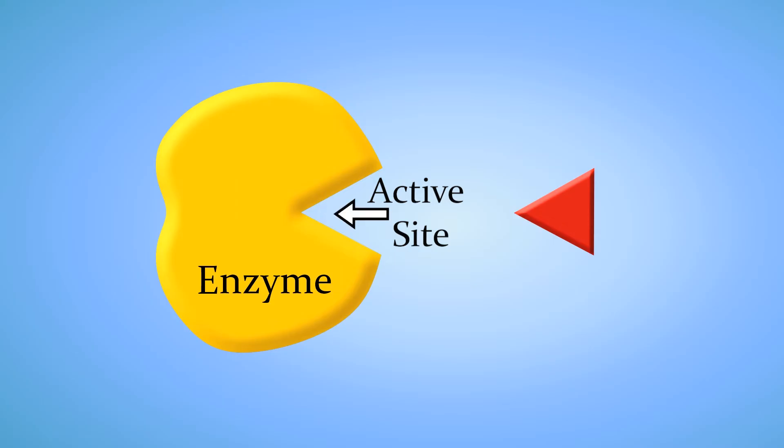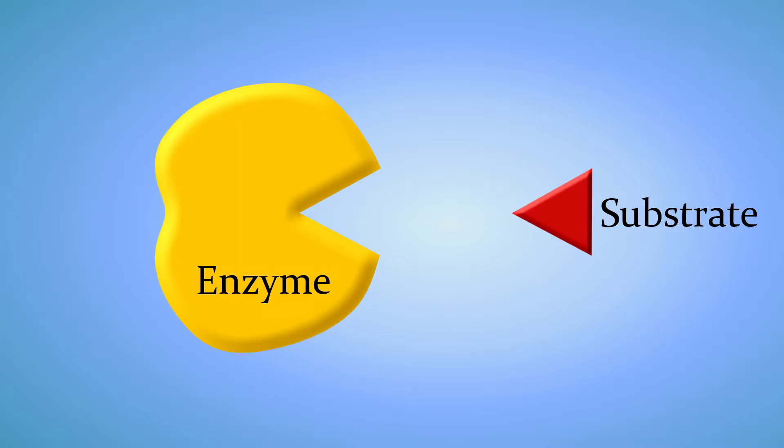On the right, we have a molecule in the shape of a triangle. It is called the substrate. This is the molecule that will undergo a chemical reaction.